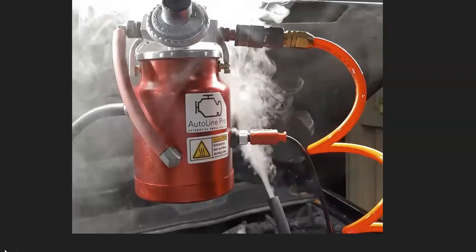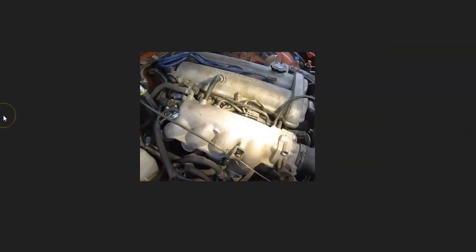Some mechanics will use like a spray and they'll start up the engine and they'll spray wherever they think the leak is at. If the engine idle changes, then they know they found the leak. So there's some different methods you go about trying to find a vacuum leak. But basically you want to go around and check all these hoses and everything going into the intake and be sure that there's no vacuum leaks going on or anything like that, because if there is then it can cause issues.